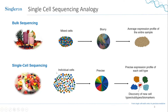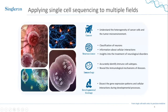In single cell sequencing you are able to take apart every cell type, understand the transcriptome, find new cell types present in very small numbers, and explore how these cells communicate with each other. This is applied to a multitude of fields but is most interesting for fields with high heterogeneity such as cancer, where you want to understand the cells making up the tumor and how it communicates with the microenvironment.